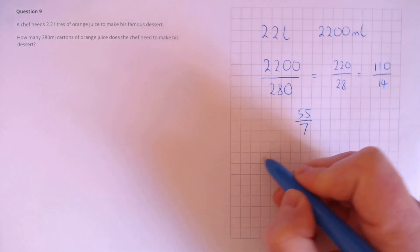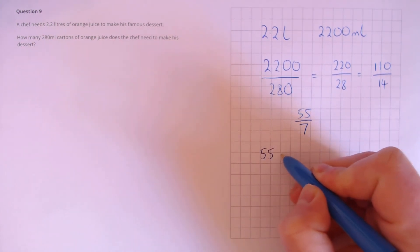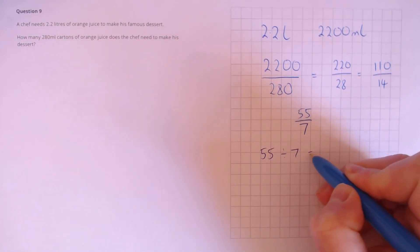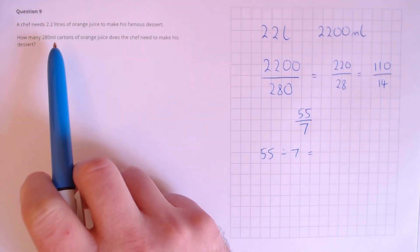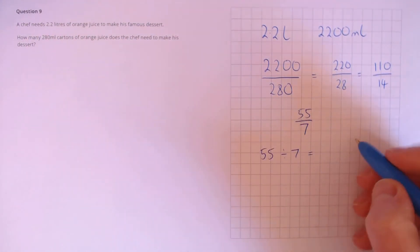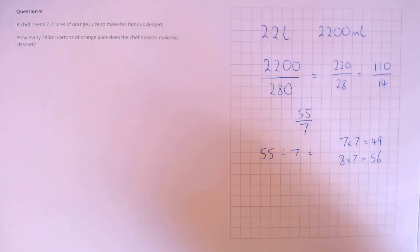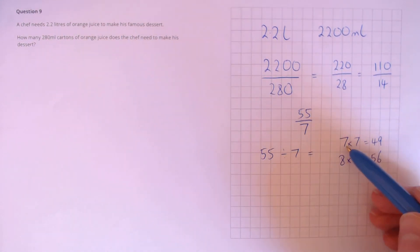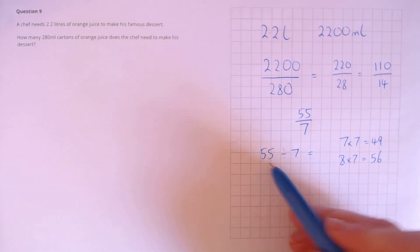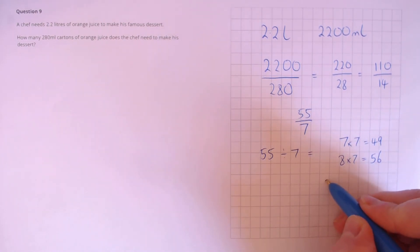So, we need to know how many times does 7 go into 55. We only need whole cartons, so we know that 7 lots of 7 is 49, and 8 lots of 7 is 56. 7 cartons will not be enough, that will give us 49, but 8 cartons will be enough, because 56 is greater than 55. So, our answer has to be 8 cartons of orange juice.